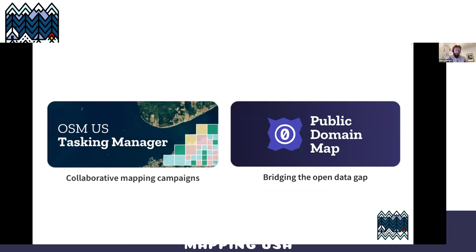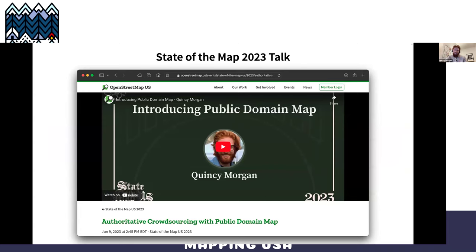Next tools I want to talk about are Tasking Manager and Public Domain Map. You might think Tasking Manager is a Humanitarian OpenStreetMap Team tool — and it is originally, but it's open source. We forked it; we have our own version with a bunch of cool upgrades specific to our needs that incorporate Public Domain Map. There's a State of the Map 2023 talk that does a deep dive into Public Domain Map that I encourage you to go see.